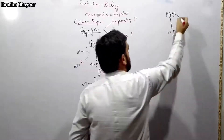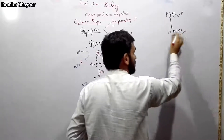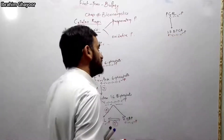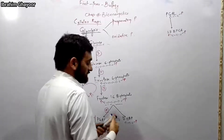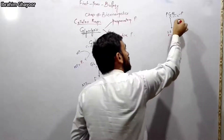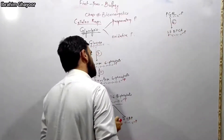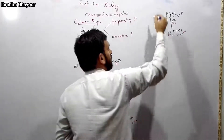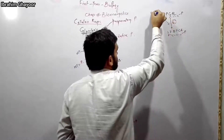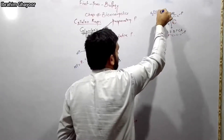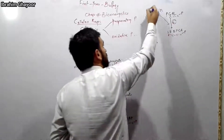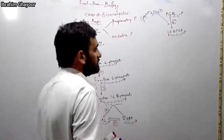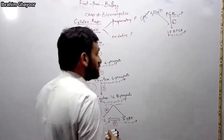PGAL — phosphoglyceraldehyde — from the six-carbon glucose now exists as two 3-carbon units. In step 6, an inorganic phosphate from the cytoplasm is added directly to PGAL. Two hydrogen atoms are also removed in this step — this is the oxidative portion.